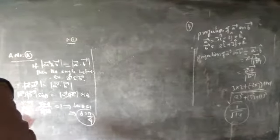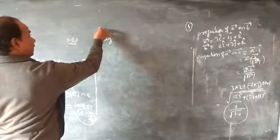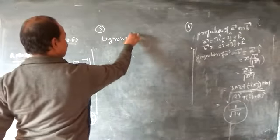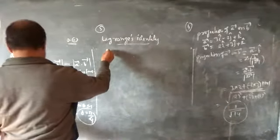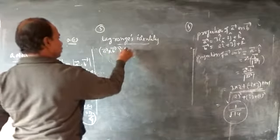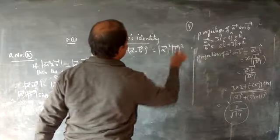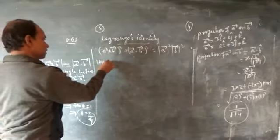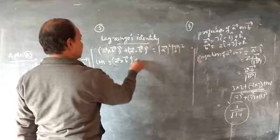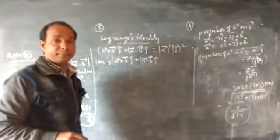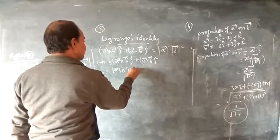Question 5 is Lagrange's identity — a good question, possibly a four-marker. The identity states: |a × b|² + |a · b|² = |a|²|b|². We have to prove it. Taking the LHS: |a × b|² + |a · b|².